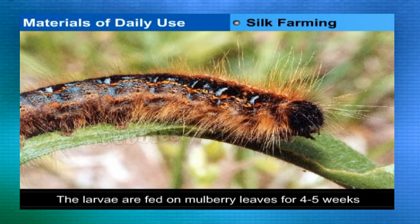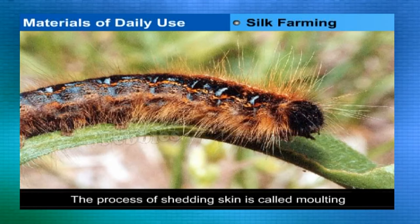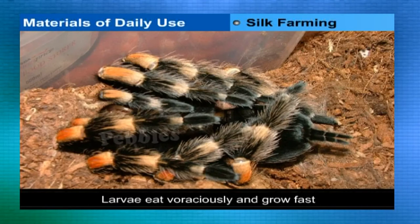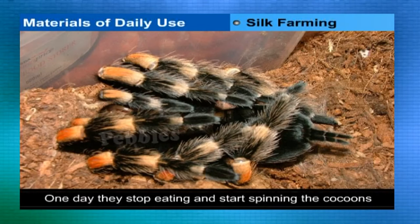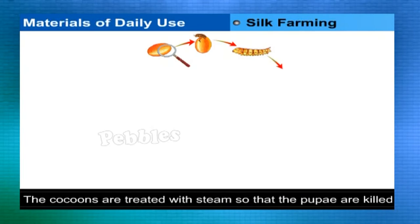The larvae are fed on mulberry leaves for four to five weeks. During feeding, each larva sheds its skin four times; this process of shedding skin is called molting. The larvae eat voraciously and grow fast. One day they stop eating, climb twigs, and start spinning cocoons — this stage is called the pupa stage.